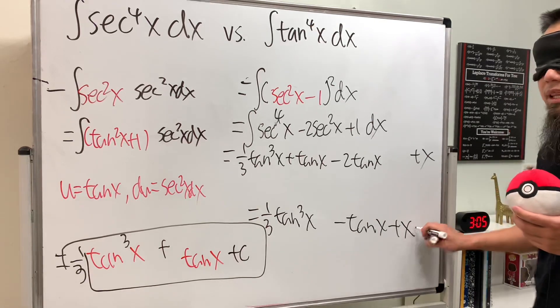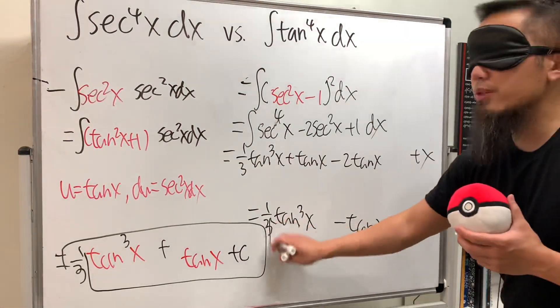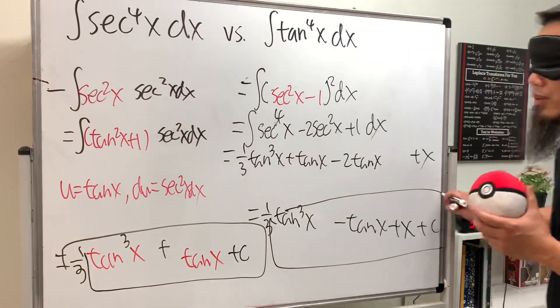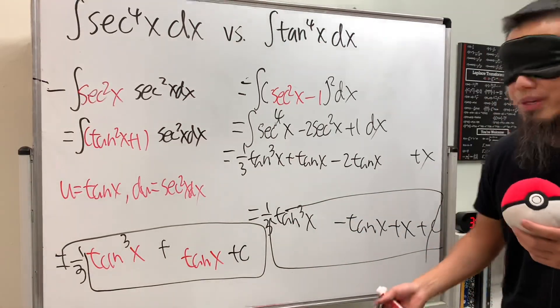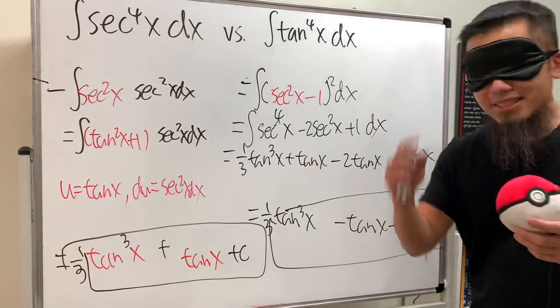So the final answer is one-third tangent cubed x minus tangent x plus x, plus C.